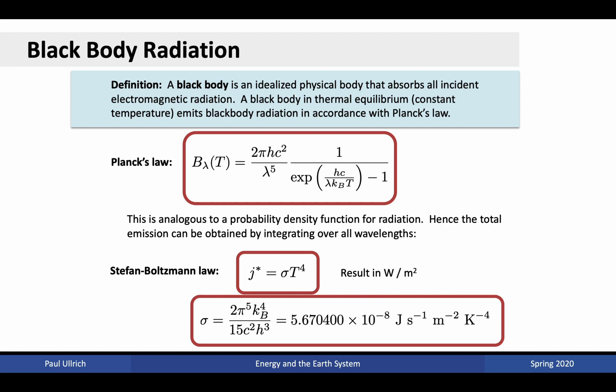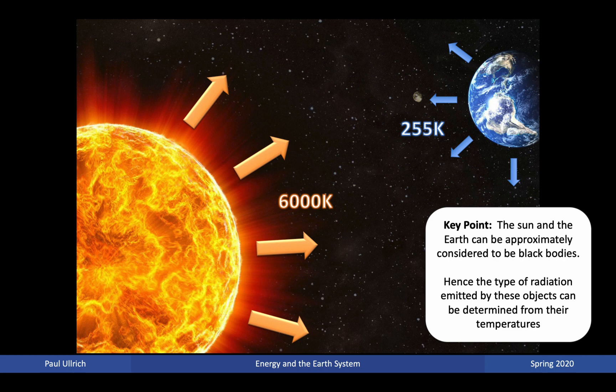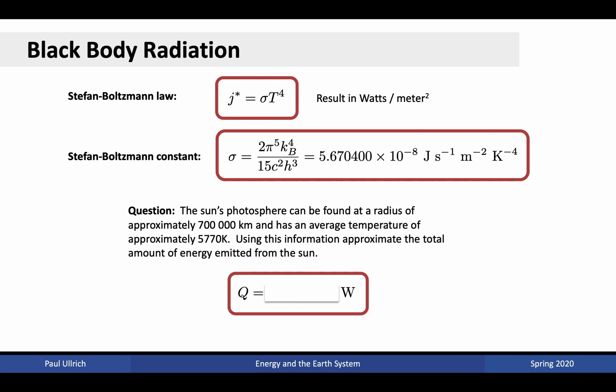The key point is that the sun and the Earth can be approximately considered to be blackbodies — a useful approximation in climate science — and so the type of radiation they emit can be determined from their temperatures. If the sun's photosphere is at a radius of approximately 700,000 kilometers from the core with an average temperature of approximately 5,770 K, we can use the Stefan-Boltzmann law and the surface area formula for a sphere to calculate that the sun emits about 3.87 × 10²⁶ watts in total.